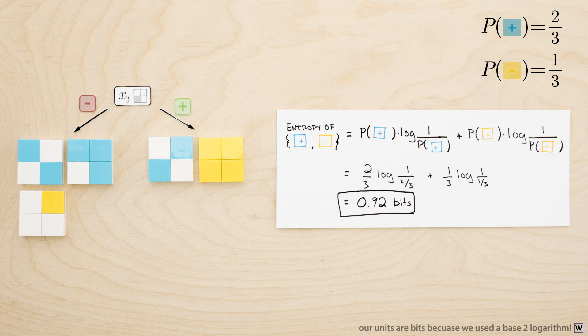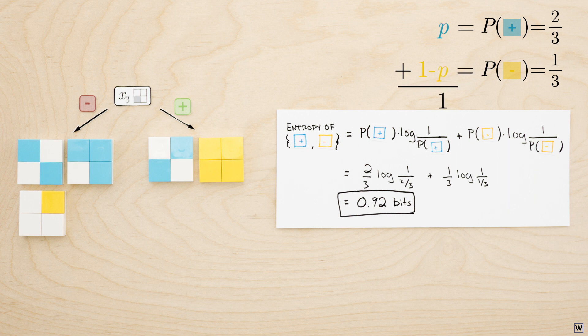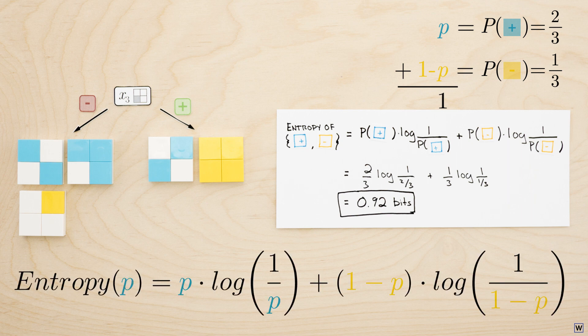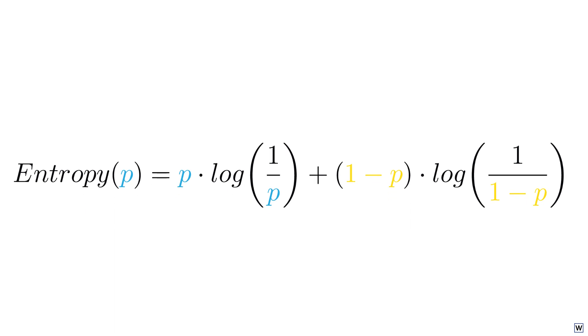Now, since our entropy, our average information content, only depends on the frequency of positive and negative examples in our node, we can express our entropy in terms of our key variable from last time, our positive class fraction, p. Since our positive and negative class fractions must add to 1, we can write our negative class fraction as 1 minus p. So we now have a new function, brazenly stolen from information theory, that we hope captures something meaningful about the information contained in any given node of our decision tree. Now that we have this new metric, what should we do with it? As we grow our tree, are we looking to create nodes with high or low entropy?